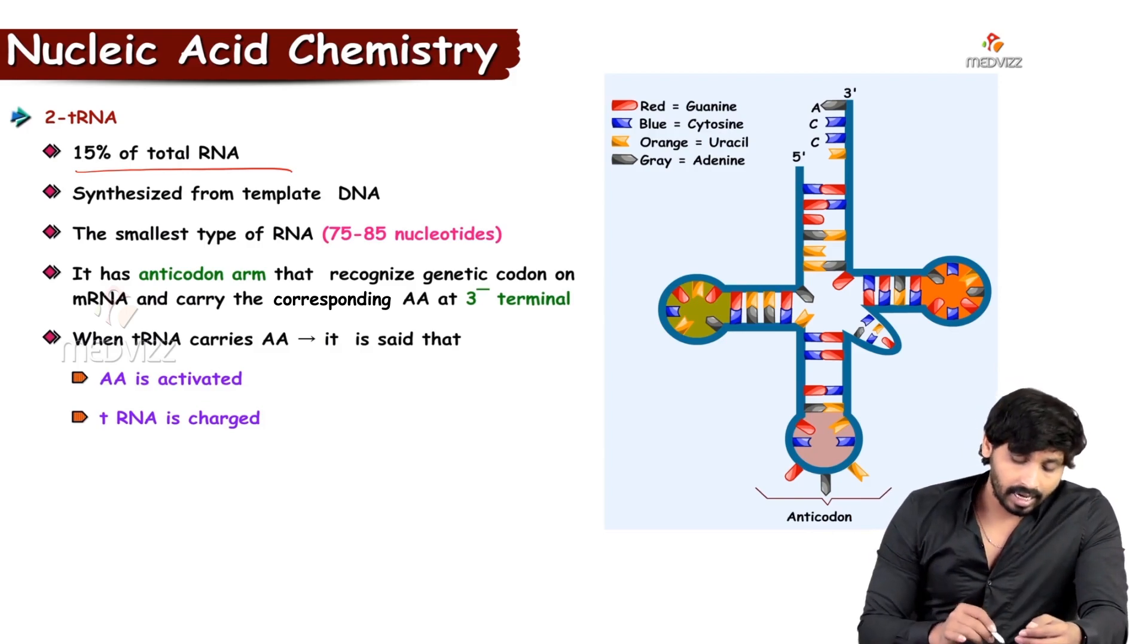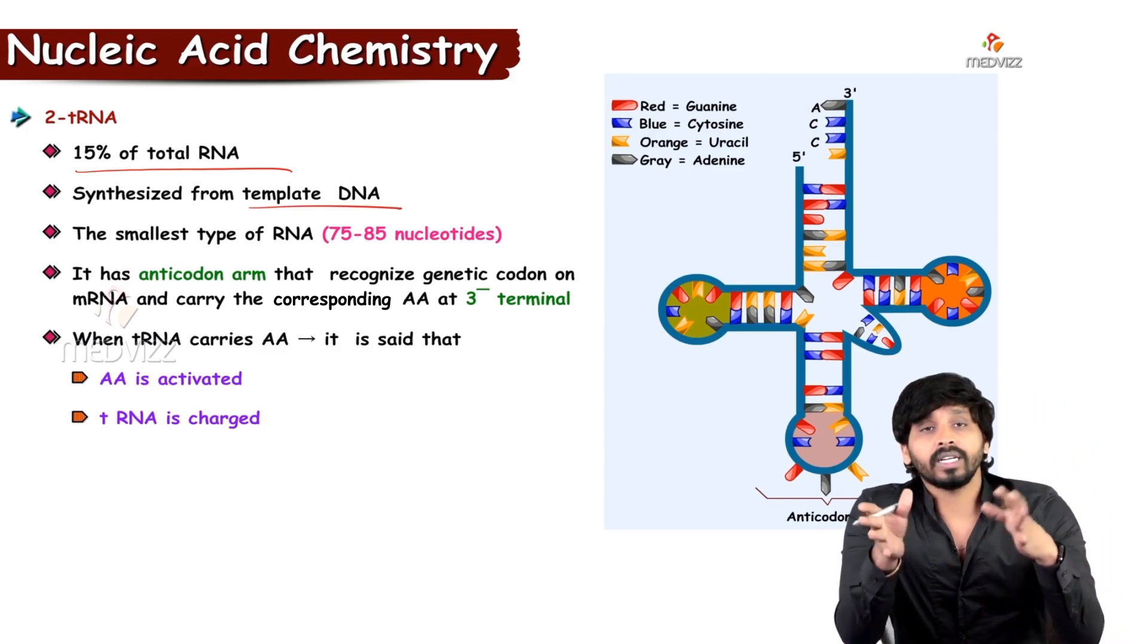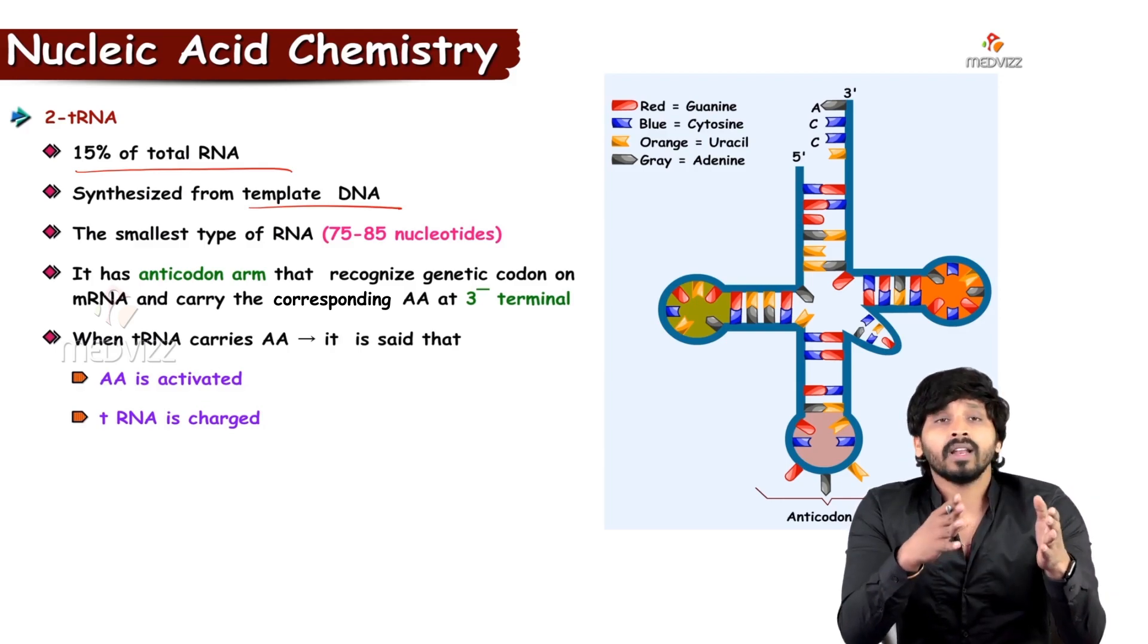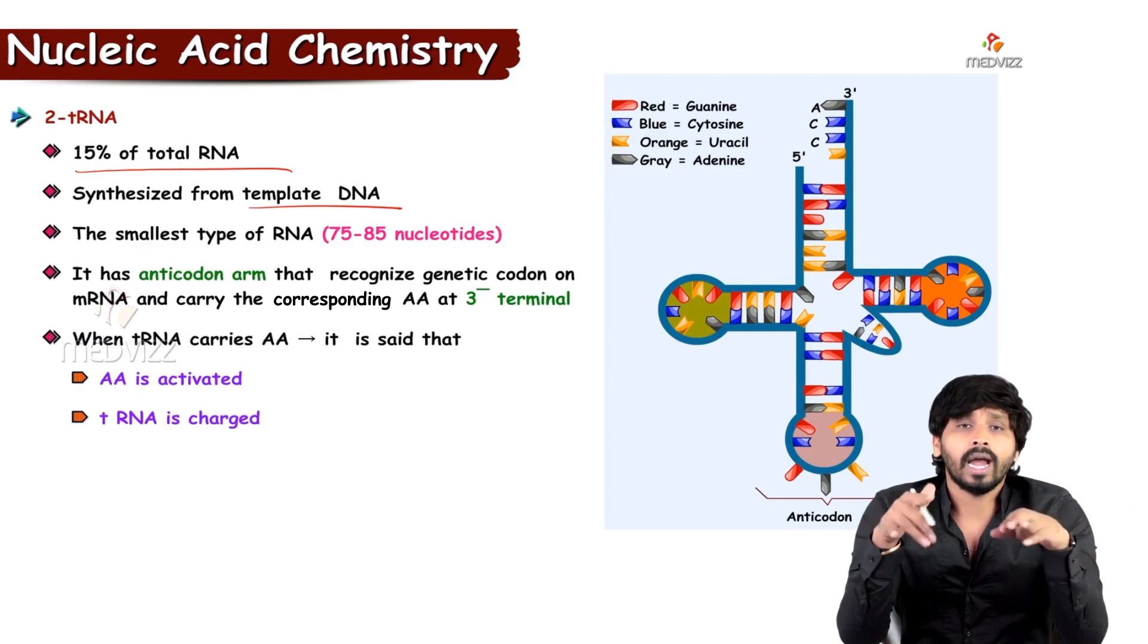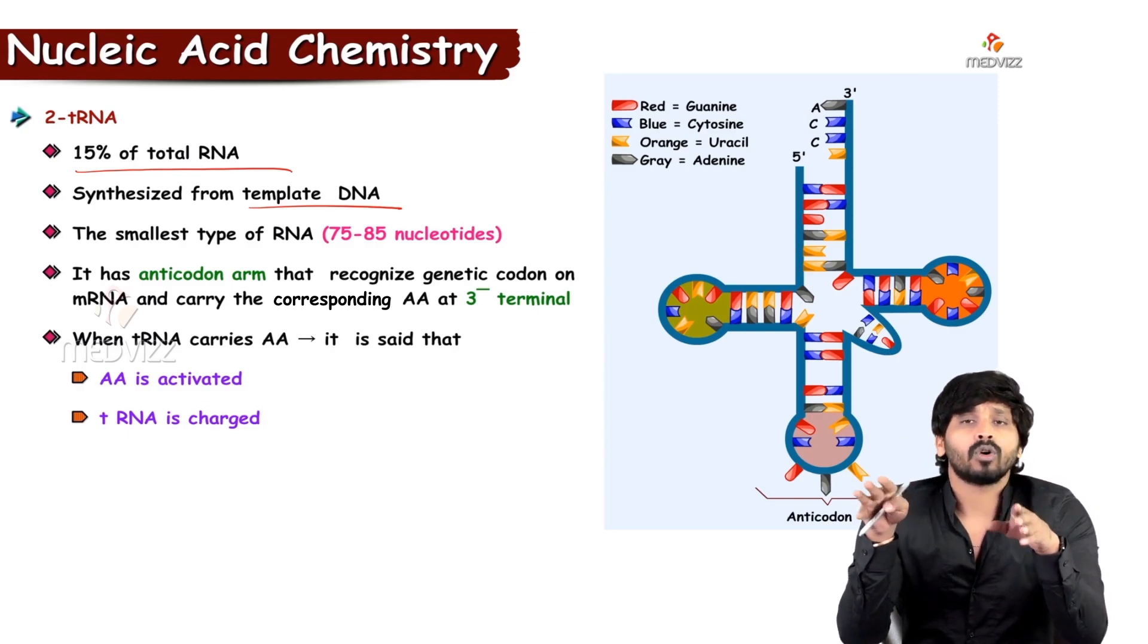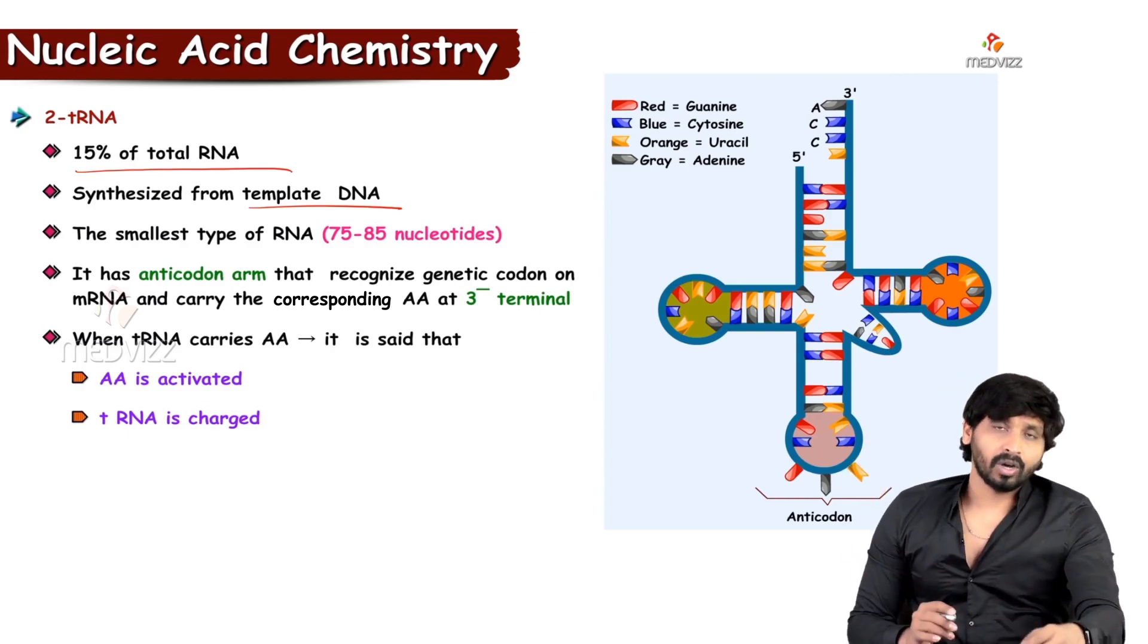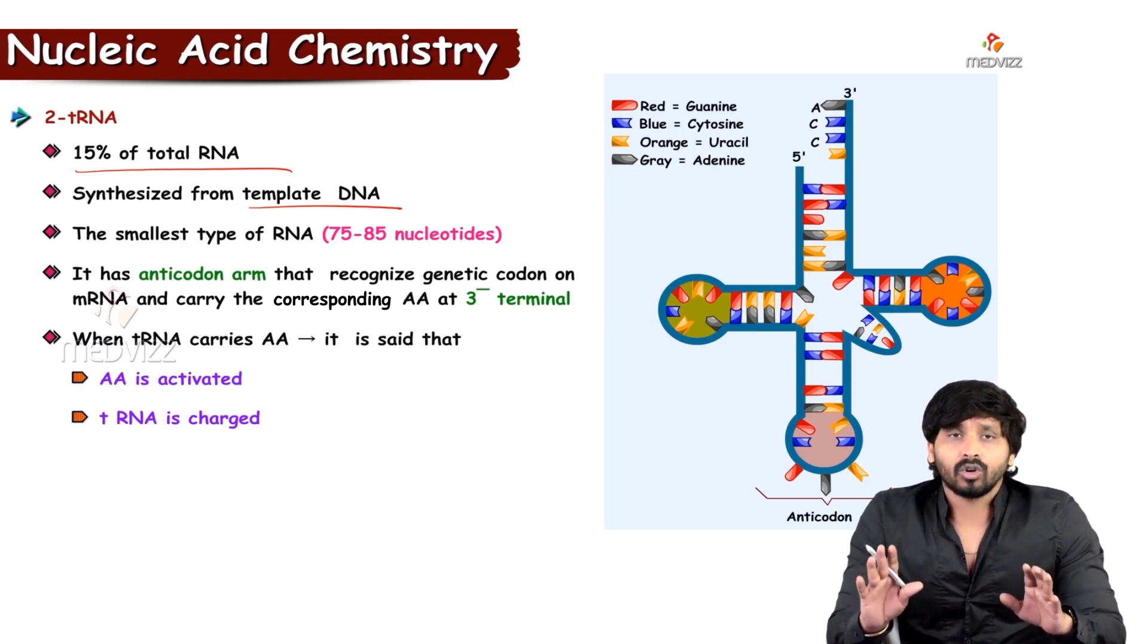It is synthesized from template DNA. What is the difference between tRNA and mRNA? mRNA is a linear one, tRNA is a folded one, and its shape is compared with clover leaf. The linear chain has been folded itself to make this clover leaf model.